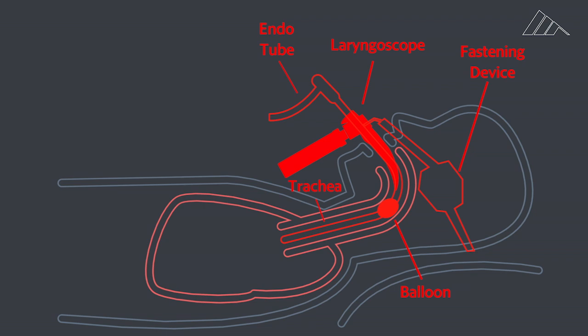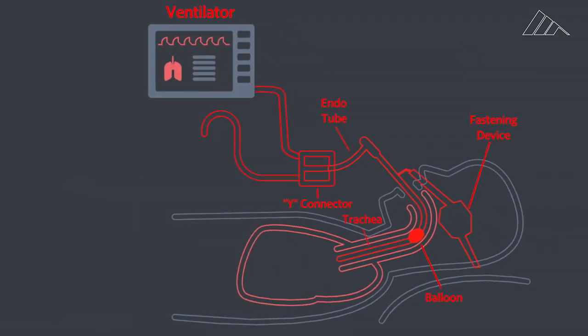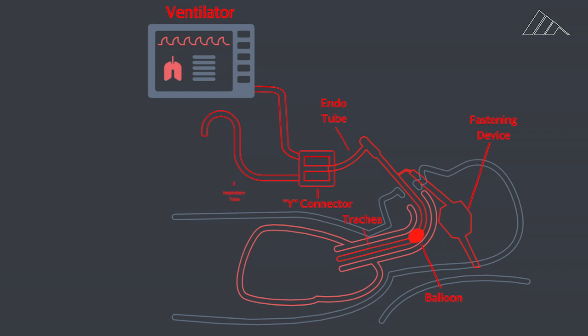After the tube is secured, the laryngoscope is removed and the outside of the endotracheal tube is inserted into a Y connector, which connects the endotube to two tubes running to the ventilator. One is the inspiratory circuit,